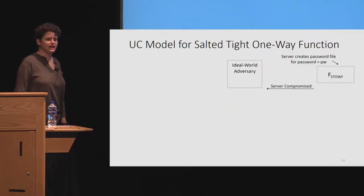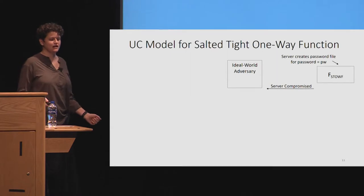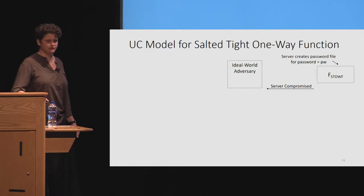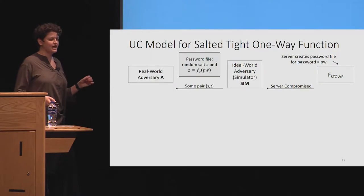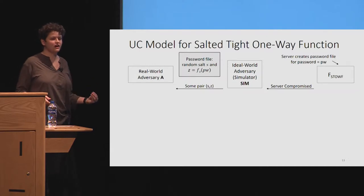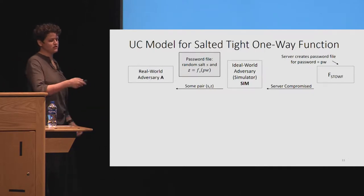Let's start with the tight one-way function. In the UC model, we have something called f-stauf — the idealized functionality of a salted tight one-way function. The salted tight one-way function has some secret password that it knows, some notion of being compromised, and some notion of having a password guess happening against it. In the case that it's compromised, it just sends a message saying it's compromised. In proofs using this, when we hear the server has been compromised, we need to generate some kind of password file that looks legitimate — but we have to generate that without knowing the password.